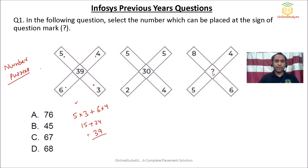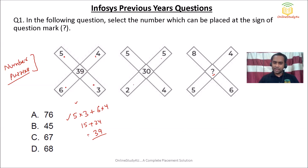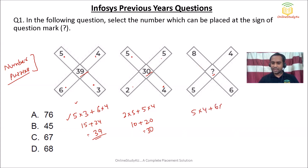For number puzzles you might have more than one logic for a particular question, and that's fine — there can be multiple logics. Here you multiply 2 × 5 = 10 and 5 × 4 = 20, so the middle number is 30. Then 5 × 4 = 20 plus 6 × 8 = 48, giving 68. So the answer for this question is option D: 68.